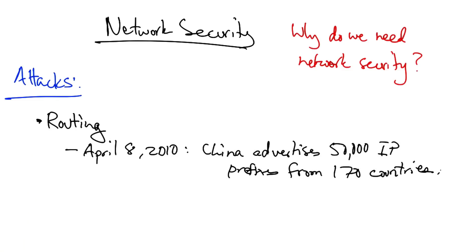For example, on April 8th, 2010, China advertised about 50,000 blocks of IP addresses from 170 different countries. The event lasted for about 20 minutes. In this particular case, the hijack appears to have been accidental because the prefixes were long enough such that they didn't disrupt existing routes. But the fact that the route advertisements were allowed to leak in the first place highlights the vulnerability of the border gateway protocol.